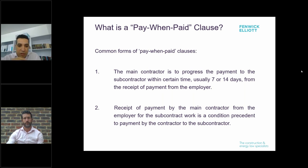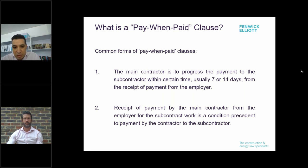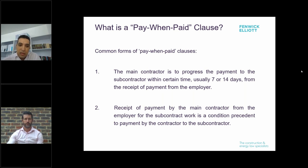The first form provides for a time frame to make payment, which starts to run from the receipt of payment from the employer. Sometimes this form also includes a provision that if no payment was made by the employer within a certain amount of time, the main contractor will have to pay the subcontractor within a reasonable time — making it less problematic in practice. The second form is where payment is a conditional obligation, a more rigid approach that makes clear the subcontractor accepts the risk of non-payment by the employer.